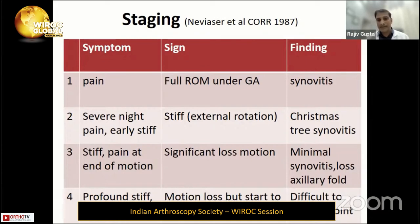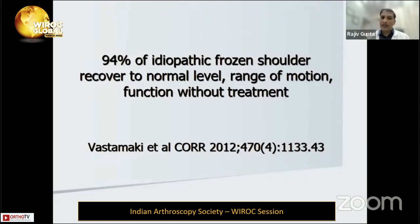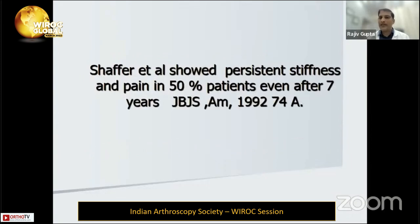In the third phase there is significant loss of motion, pain and stiffness at end of motion, and increased thickness of the axillary fold. The last phase shows profound stiffness with minimal pain, and motion loss begins to improve slowly. Per literature, most frozen shoulders recover by themselves — some suggest complete recovery in two years, others say near-normal function after four years. However, even after seven years, 50 percent of patients show some limitation of movement.